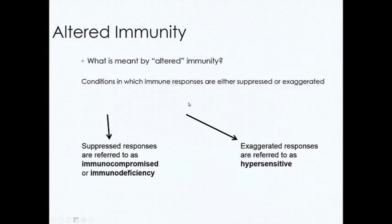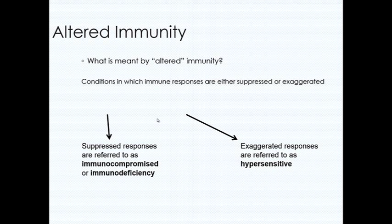What is meant by altered immunity? There are two ends of the spectrum. You can have an individual that is immunocompromised — their immune system is not working efficiently for a variety of reasons, also called immunodeficiency. And then at the other end of the spectrum, you can have an individual whose immune system is in hyperactive hyperdrive and will not shut down. Either one is not good. Both cause risk factors, both cause organ damage, both can cause difficulties for your patient.